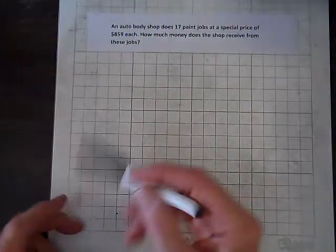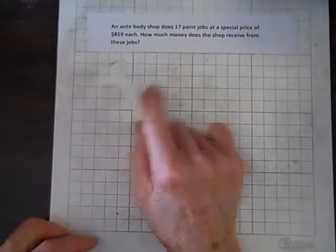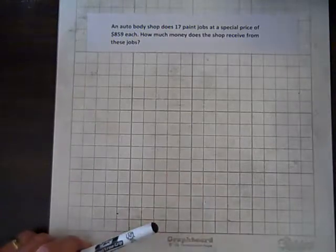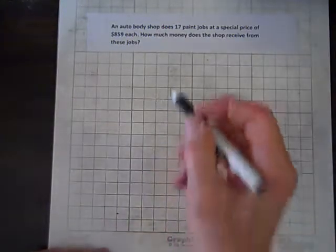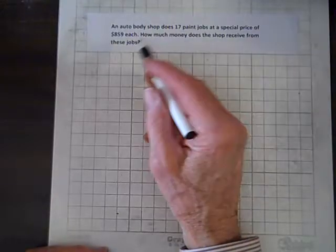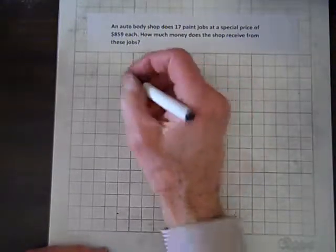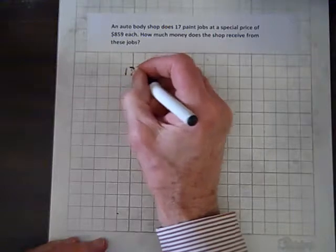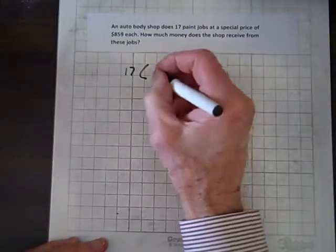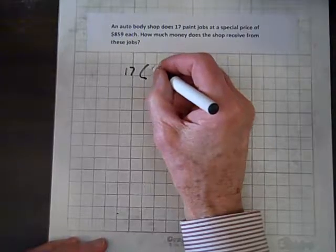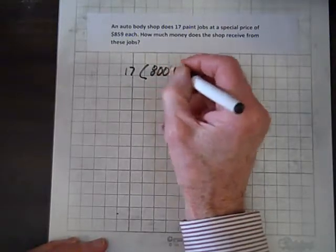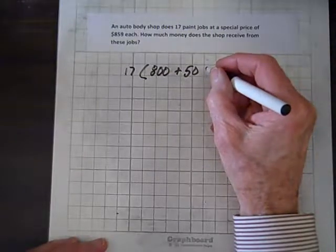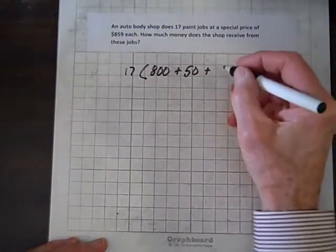Well, now it's multiplication time. So an auto body shop does 17 paint jobs at a special price of $859 each. How much money does a shop receive from these jobs? Well, I guess we multiply $859 times 17. Well, you know, you can use your calculator with this, and I don't have any problem with that. But I'm going to do it a little different. So I've got 17 times, in place of 859, I'll put 800, plus 50, plus 9.